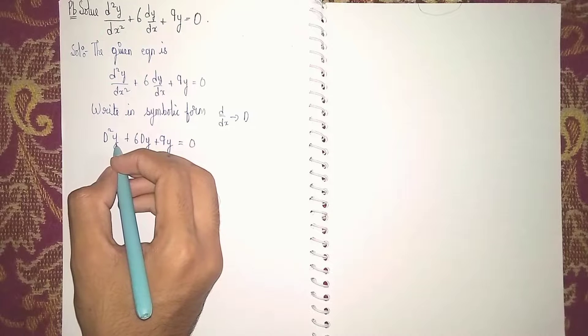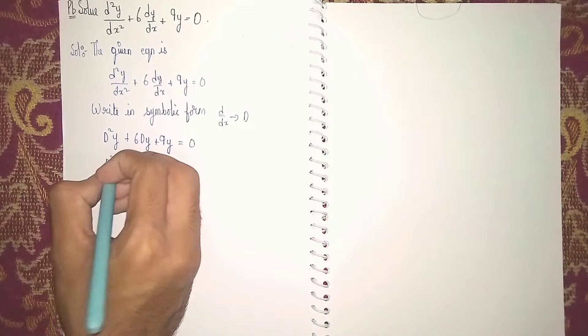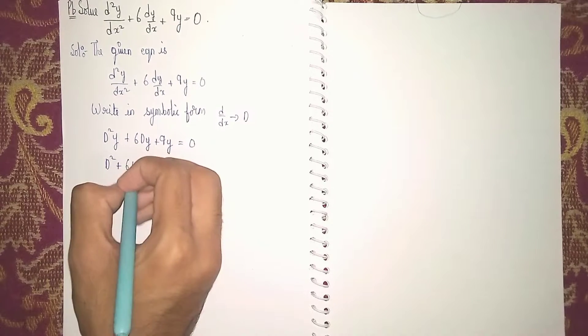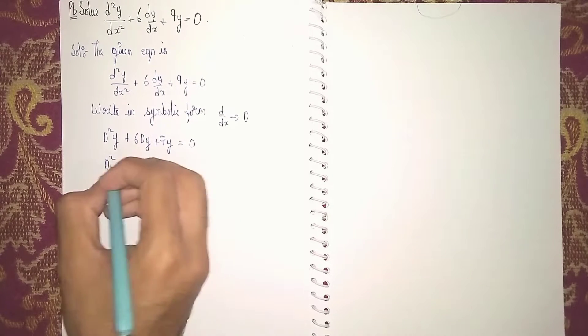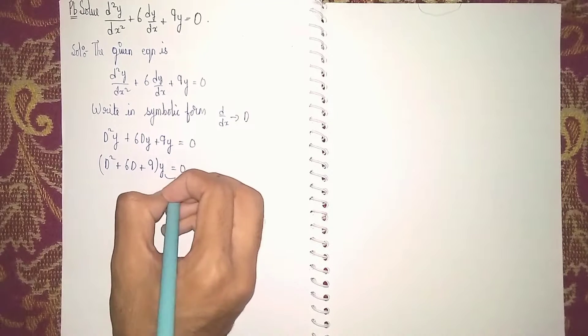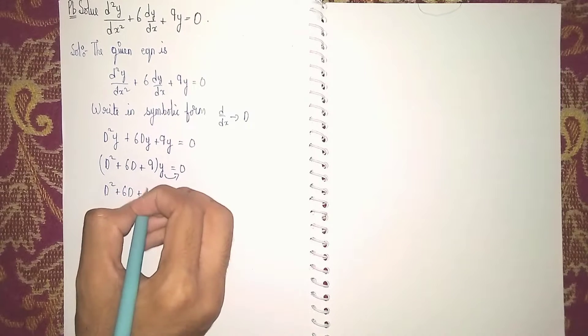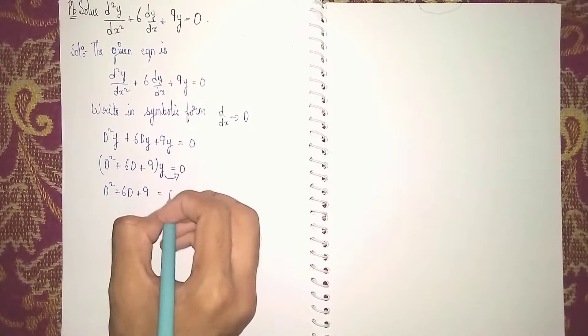Here you are seeing that y is common, we can take it common. So it becomes (D² + 6D + 9)y = 0. Send this y to the other side, it becomes 0. So at last, D² + 6D + 9 = 0.